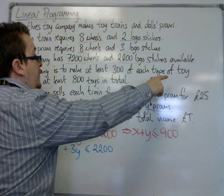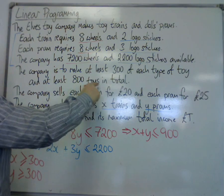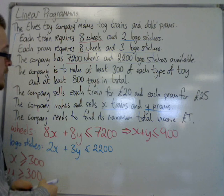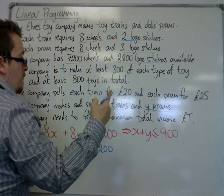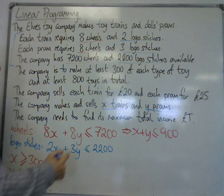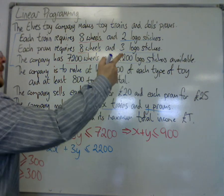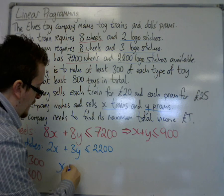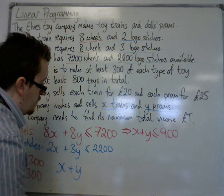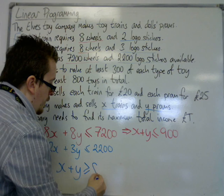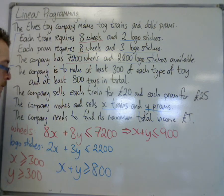We're also told that at least 800 toys in total. The total number of toys comes from x plus y — because x is the number of trains and y is the number of prams, so that's the total number of trains and prams — and that needs to be at least 800. So x plus y is greater than or equal to 800.